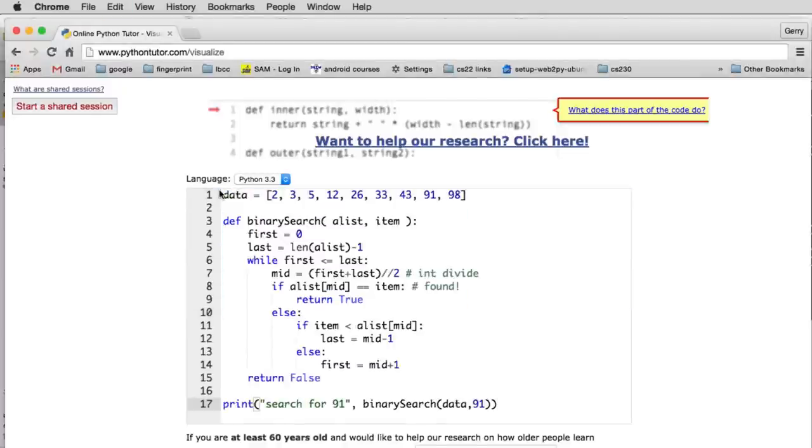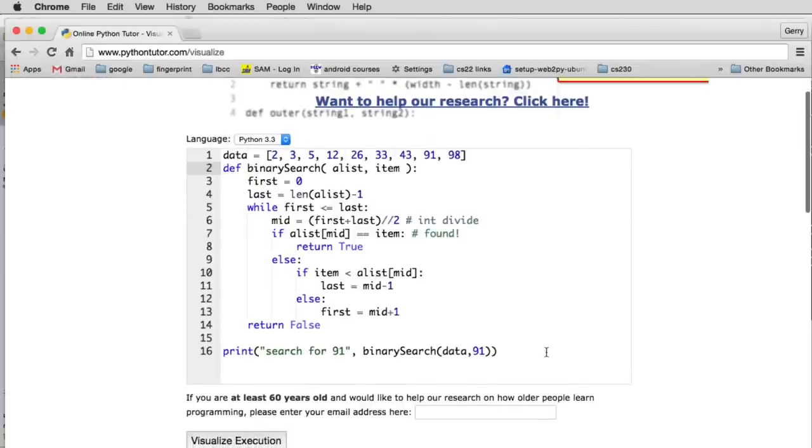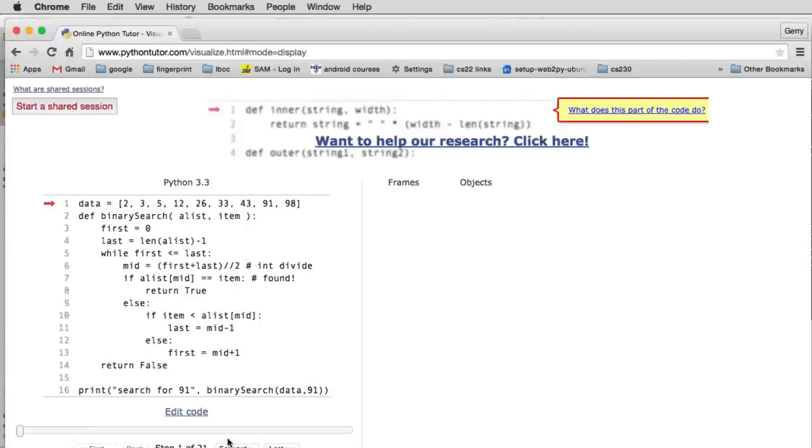Now when you use the Python visualizer, make sure you choose the version of Python you're using. And I'll just make that a little shorter so it sets up the array, it has our code and we're calling binary search here at the end. So let's go ahead and run it. So there's a thing that says visualize execution.